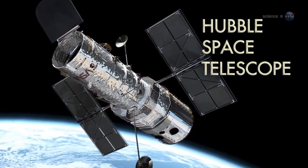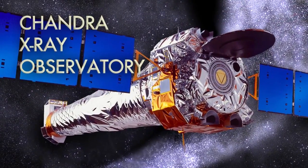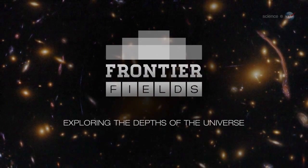Lately, the Hubble Space Telescope, along with the Spitzer Space Telescope and the Chandra X-ray Observatory, has been looking through this gravitational lens as part of a program called Frontier Fields.